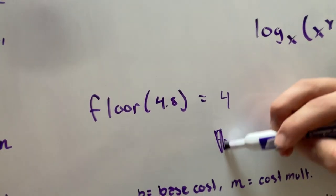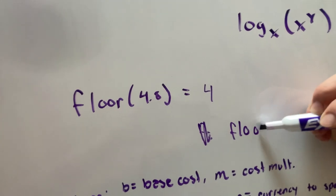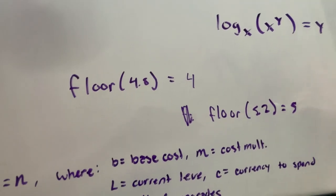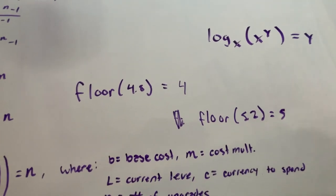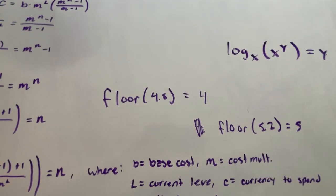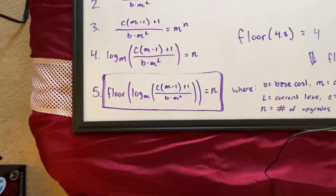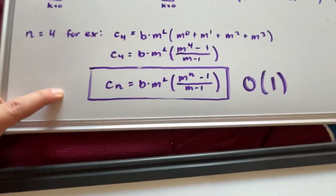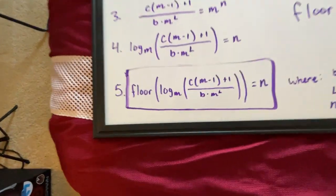If we were to do the same thing for floor 5.2, we're going to get 5. Now the ceiling will do the opposite. Ceiling will round it up to the next whole number.